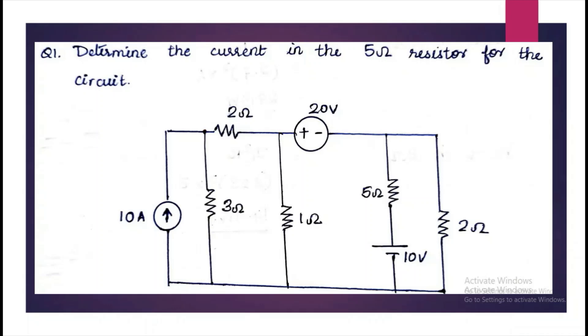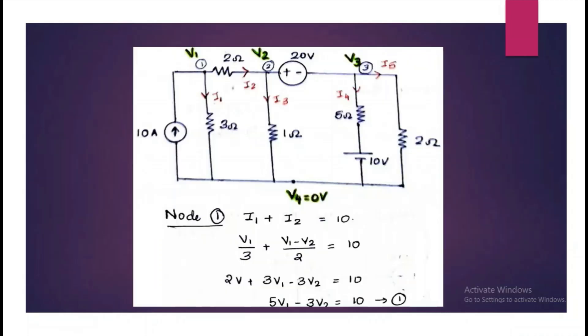Next let us see an example problem. Determine the current in 5 ohm resistor for the circuit. So first mark the nodes. We have the nodes 1, 2, 3 and 4. 4 is the ground node with voltage is equal to zero.